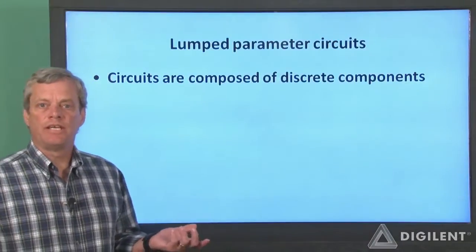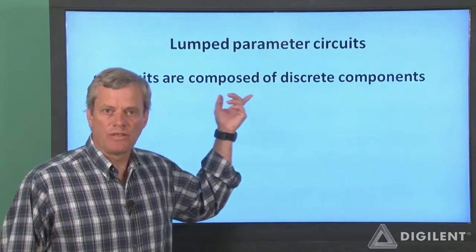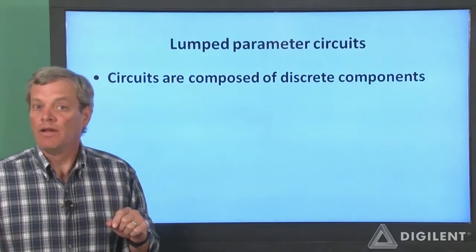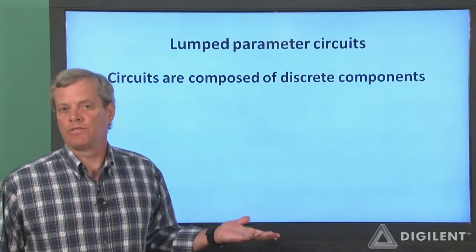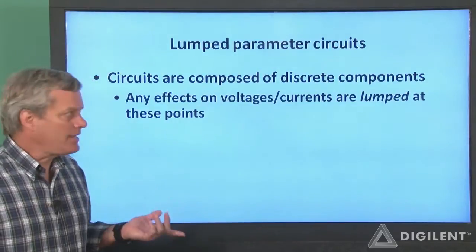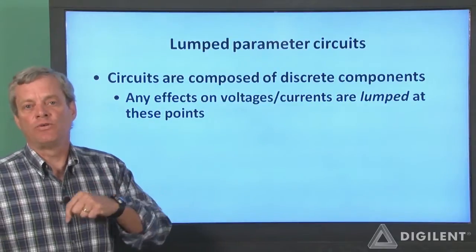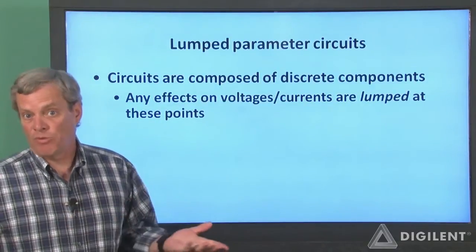To understand nodes, we must first understand what is called the lumped parameters approach towards representing circuits. The concept of lumped parameter systems is a fundamental assumption used to analyze and understand circuits. Our lumped parameter representation of a circuit essentially assumes that the circuit is made up of components located at discrete points in the circuit. These components can be resistors, diodes, capacitors, and so on. The effects of these components on the circuit's voltage and current are assumed to be lumped at these locations, hence the term lumped parameter circuit.